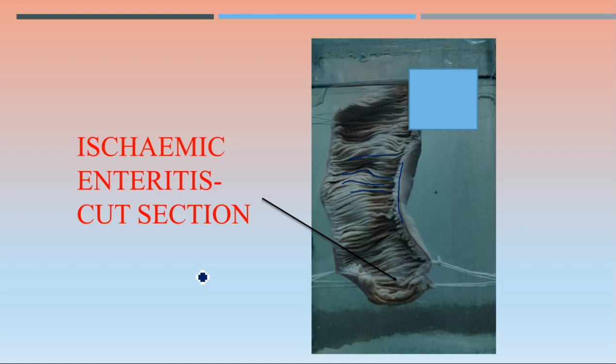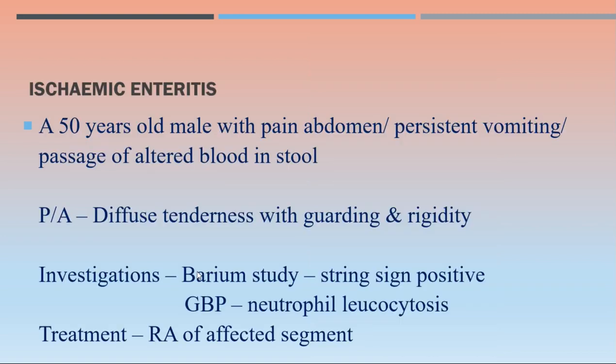This patient was a 50-year-old male who presented with pain abdomen, persistent vomiting, and passage of altered blood in the stool. On examination, especially on per abdomen, there was diffuse tenderness with guarding and rigidity present.